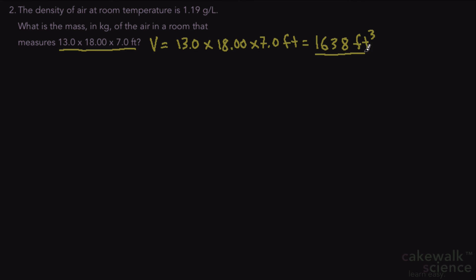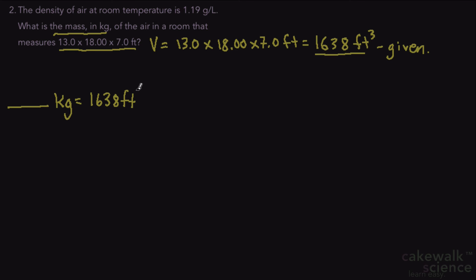We're not going to round yet because we don't want to cause any numerical error due to rounding too soon, so we'll leave it at that for now. That's going to be our given value. Our desired value is kilograms, and our given is the volume, which is 1638 cubic feet.